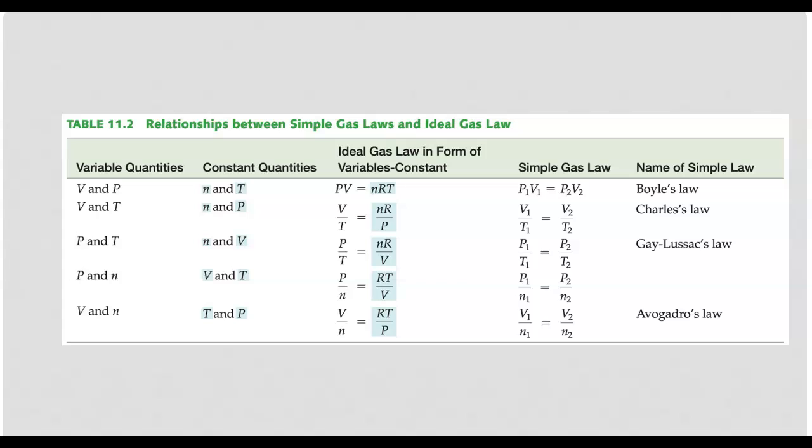If we look at the kind of laws that we saw before, basically to get the ideal gas law, if we think of like for Boyle's law that volume is proportional to 1 over P, if we kind of replace the proportionalities with the R as a constant, then we can derive the ideal gas law.